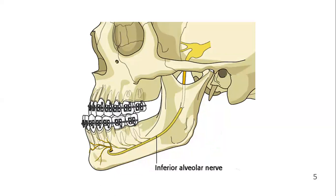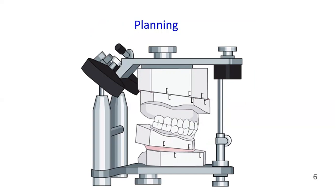The obvious problem of this procedure is the close proximity of the osteotomy lines and the neurovascular canal. Care should be taken not to damage the inferior alveolar nerve during this procedure. Proper planning of orthognathic surgery is essential.